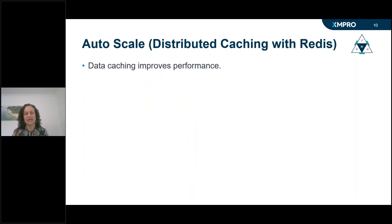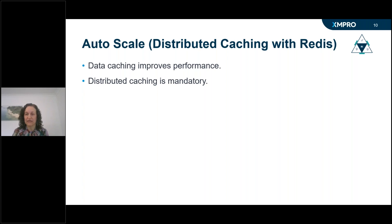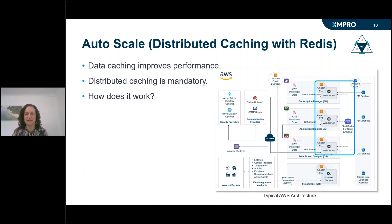Data caching is a technique to improve the performance and responsiveness of applications by storing frequently accessed data in memory — a fast and easily accessible location — rather than using a time-consuming operation like accessing a database. Distributed caching is when that data is stored in an external service accessible by one or more servers. It is mandatory when you scale out and run more than one instance of our product. I'm showing the typical architecture for AWS, but it is the same concept on other platforms.